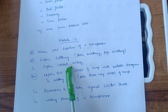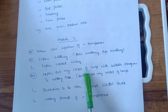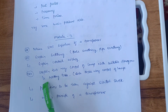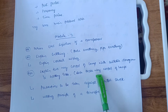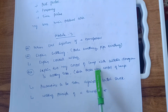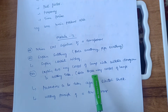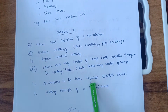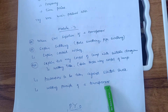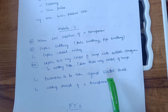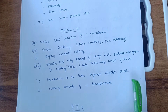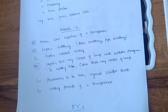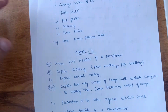Also focus on conduit wiring. The super important question in Module 3 is: explain two-way control of a lamp with a suitable diagram and working table. Sometimes they will also ask three-way control of lamps. Additionally, cover precautions to be taken against electric shock and the working principle of a transformer. These are the theory concepts you must focus on for Module 3.